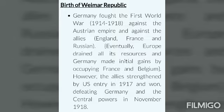A National Assembly met at Weimar and established a democratic constitution with a federal structure. Deputies were elected to the German parliament, or Reichstag, on the basis of equal and universal votes cast by all adults, including women.